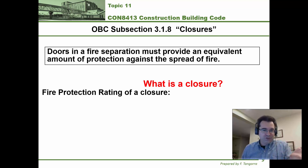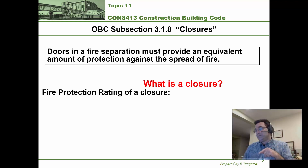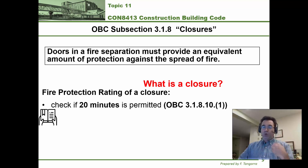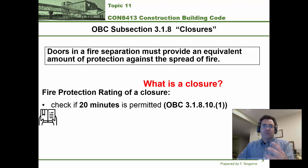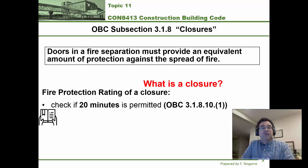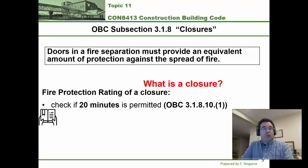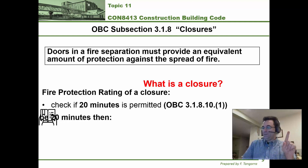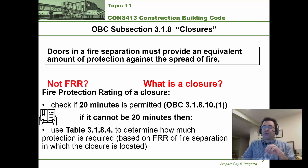For a closure — for example, a door from a classroom in the ACE Building into the public corridor — the building code specifies its fire rating. First, check whether that closure is allowed to be a 20-minute door under sentence 3.1.8.10.1. If it's not allowed to be 20 minutes, then you must go to Table 3.1.8.4 and find the fire rating of that door based on the fire rating of the wall.